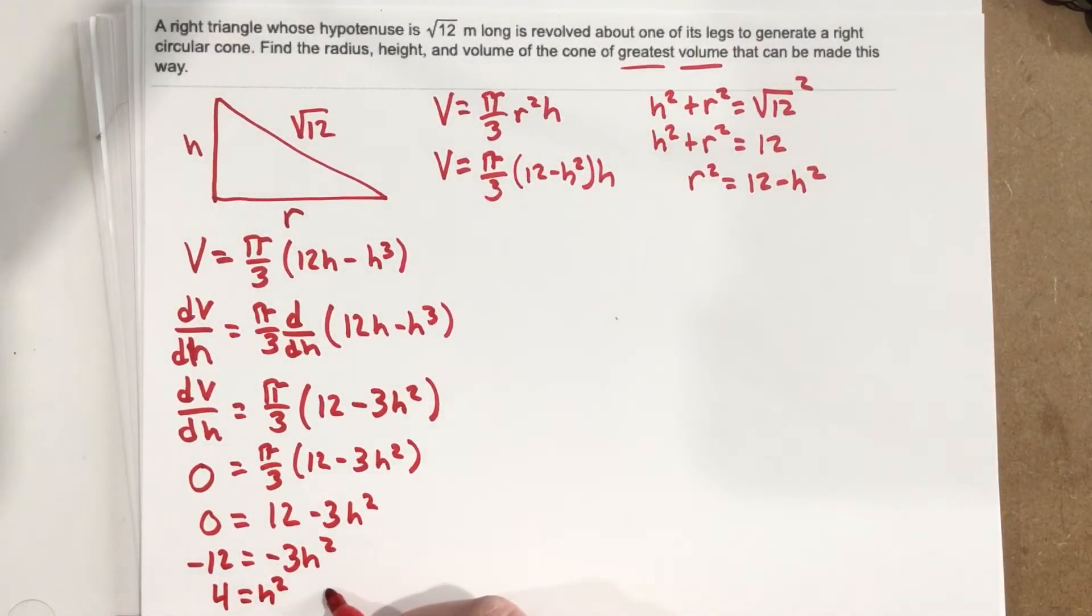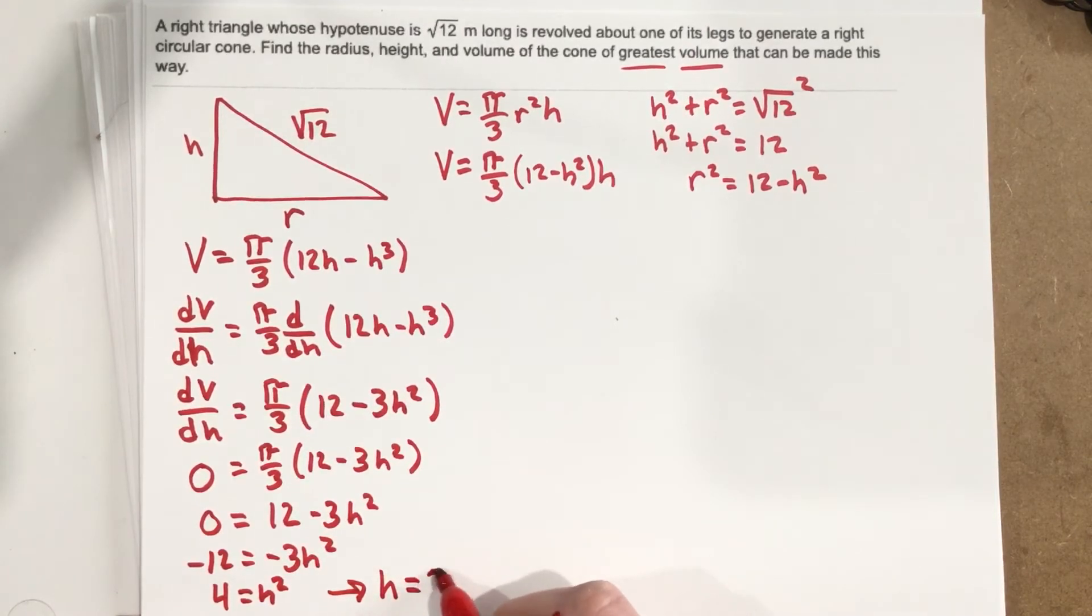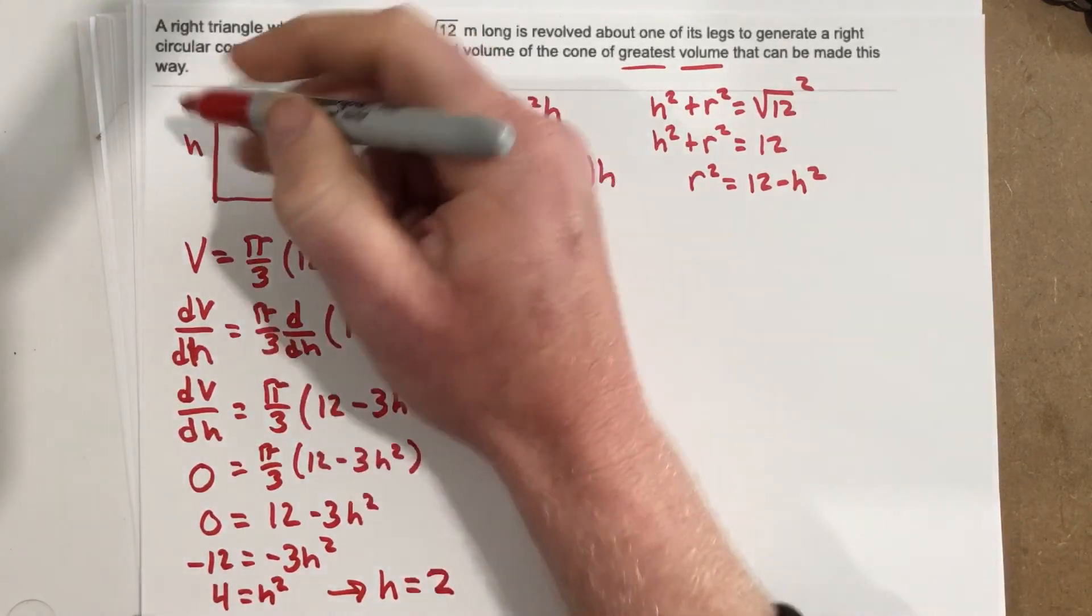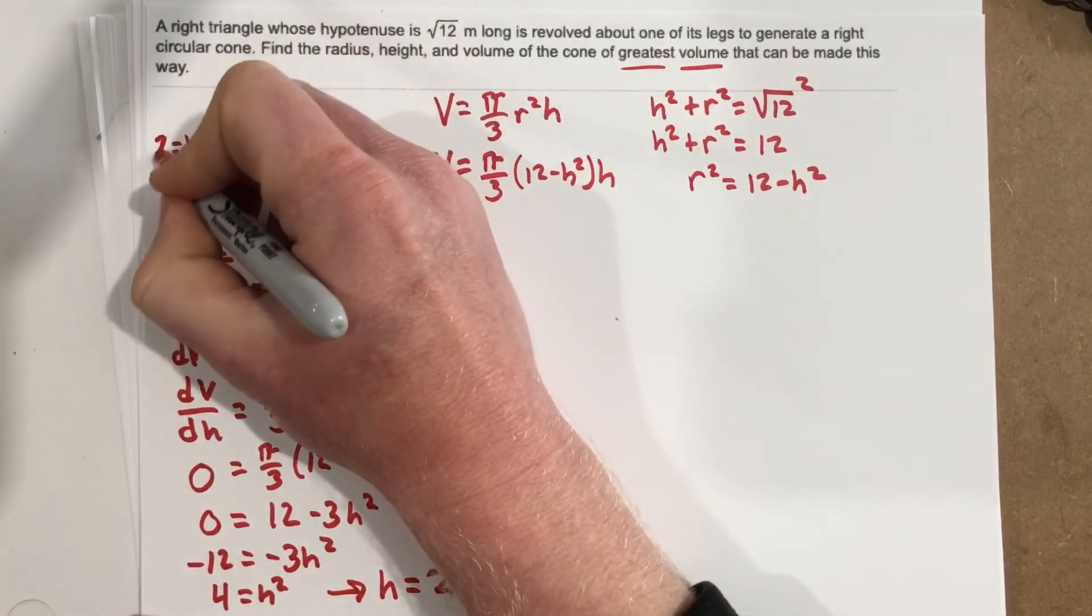Square root each side and we would end up with h = ±2. But remember our height can't be negative, so we're just going to say h = 2. So our height right here we know is 2.